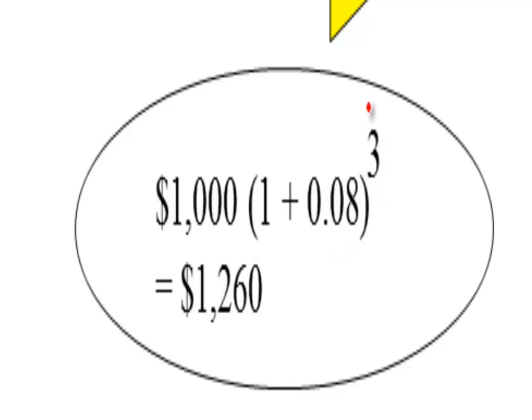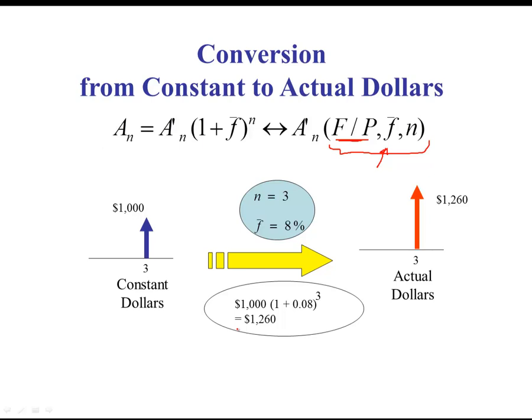Here, 3 is the number of periods, 0.08 is the average inflation rate, and 1000 is the constant dollars. Multiplying that out, we get $1,260 as the actual dollars. Including inflation makes the $1,000 equivalent to $1,260 — this illustrates how inflation plays a huge factor in the value of money now compared to the future.